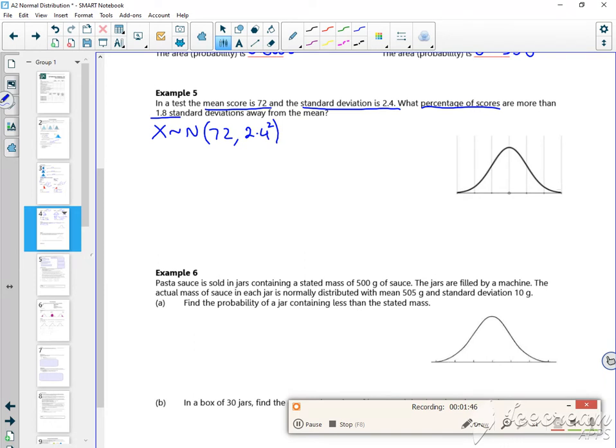So we're looking at mu plus or minus 1.8 lots of sigma. So mu minus 1.8 sigma is 72 minus 1.8 lots of 2.4, which they say is 67.68.